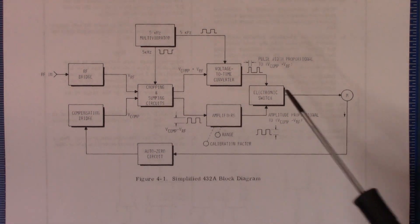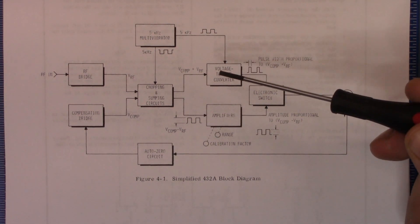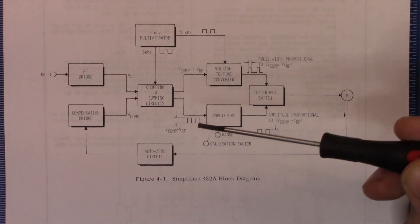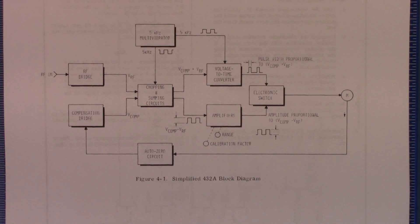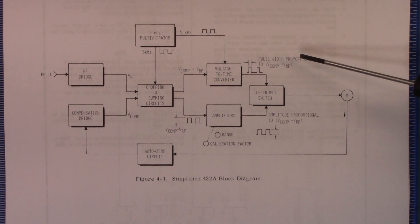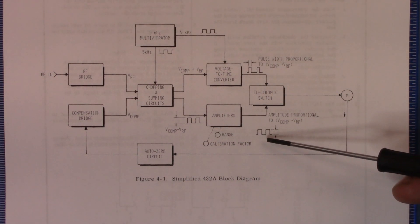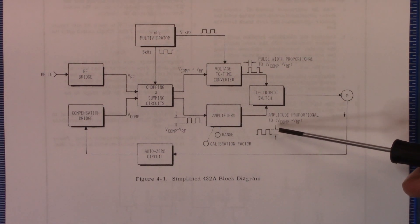And it does that by combining them together and then producing two signals, basically vcomp plus RF and vcomp minus RF. And what we end up with is we end up with one set of pulses that have a width proportional to their value. And then we end up with one set of pulses that have a height proportional to their value.